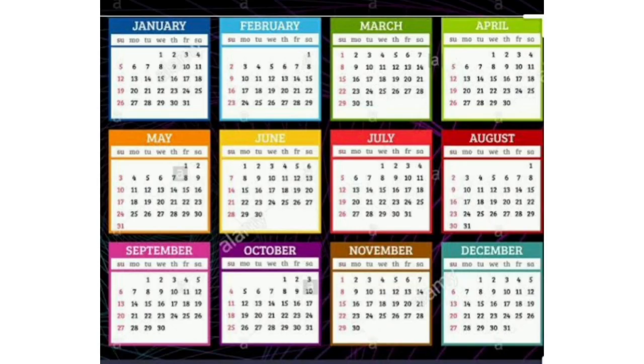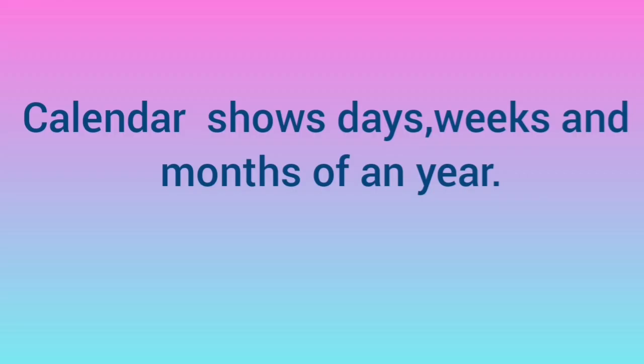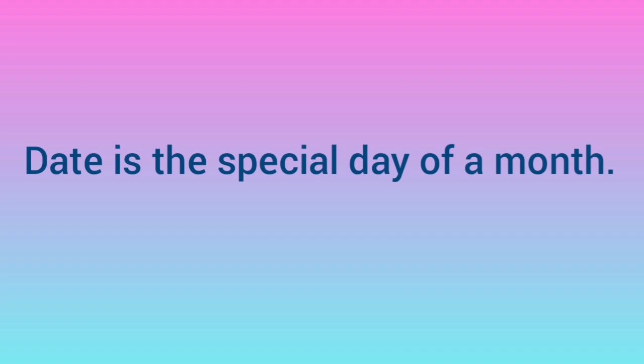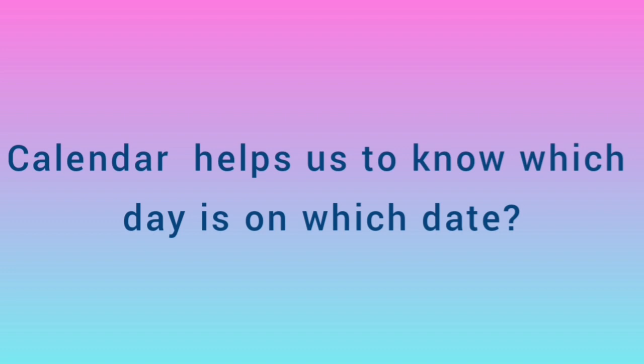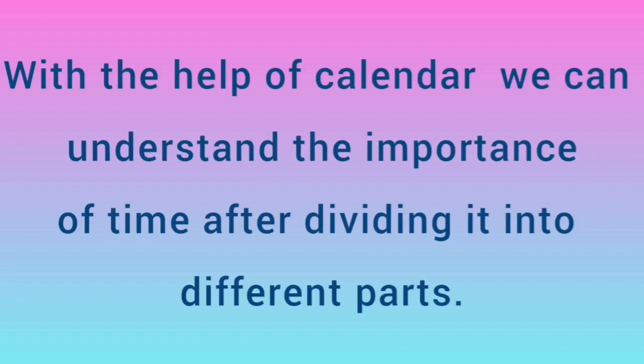Dear students, you have learned about these months. A calendar shows days, weeks, and months of a year. A date is the special day of a month. A calendar helps us to know which day falls on which date. With the help of a calendar, we can understand the importance of time after dividing it into different parts.